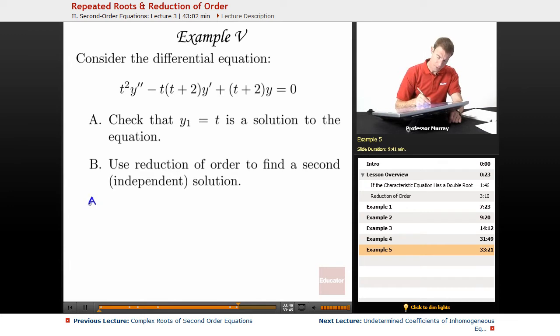To solve part A, we're given that y1 equals t might be a solution. So if y1 equals t, y1 prime would be 1, and y1 double prime, the derivative of 1, is 0.